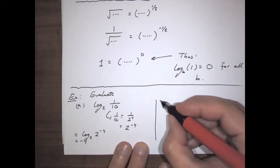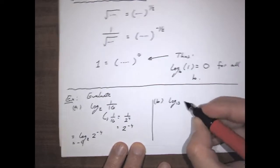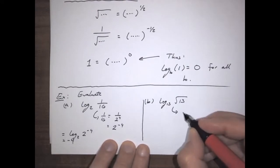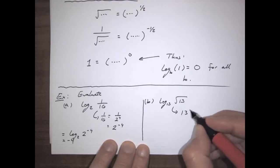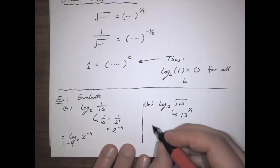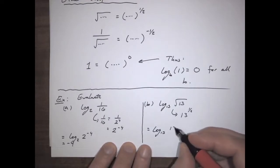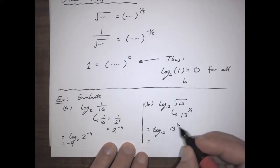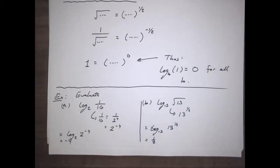Similarly, if we have something like log base 13 of the square root of 13, we need to express the square root of 13 as an exponent base 13. The square root of 13 is the same as 13 to the 1 half power. So this is equal to log base 13 of 13 to the 1 half power, and the log and exponent of the same base are inverse functions — they cancel, leaving us with 1 half.